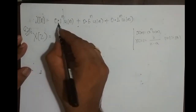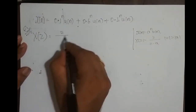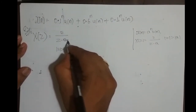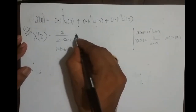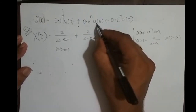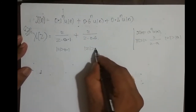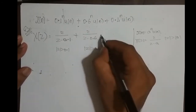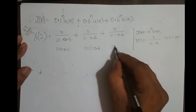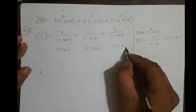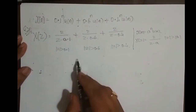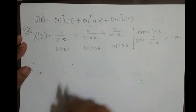So X(z) equals z/(z−0.1) with ROC |z| > 0.1, plus z/(z−0.6) with ROC |z| > 0.6, plus z/(z−0.4) with ROC |z| > 0.4. These are the individual ROCs for each individual sequence component. What we need is the combined ROC.